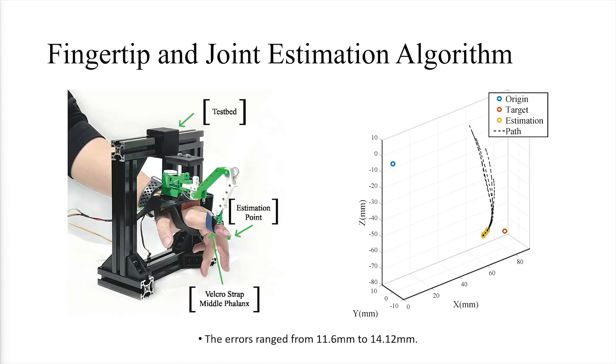The position estimation errors ranged from 11.6 mm to 14.12 mm, indicating a small deviation in accuracy during the module's operation.